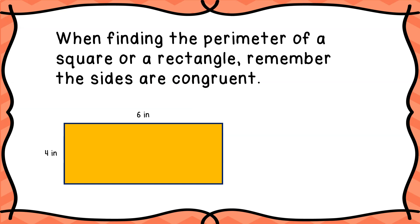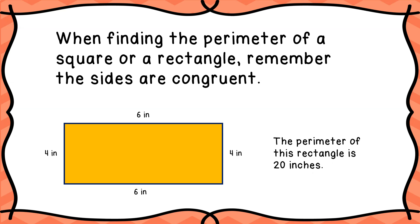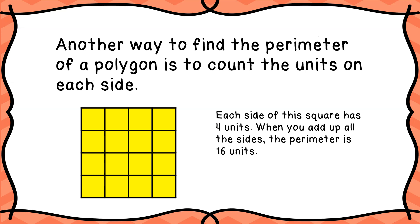When finding the perimeter of a square or a rectangle, remember that opposite sides are congruent. If we look at this rectangle, we have four sides but only two have measurements shown. This side says six inches, so the side facing it is also six inches. If this side is four inches, the opposite side is also four inches. Adding six plus six plus four plus four, the perimeter of this rectangle is twenty inches.